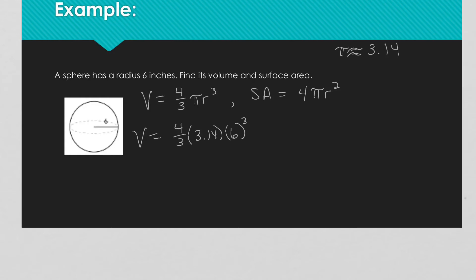I wound up with 904.32. Now I'm going to use the squiggly equals sign here because this is where we approximated — it's appropriate to use the squiggly equals throughout since we had to round for pi. So 904.32 inches — we found volume, so that would be to the third power — so 904.32 cubic inches is our volume.